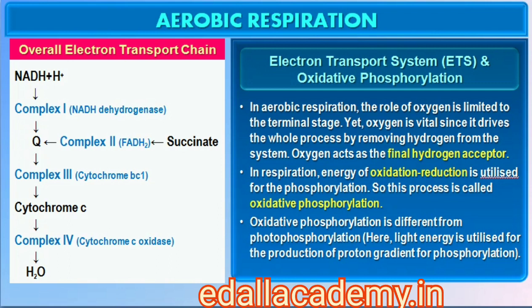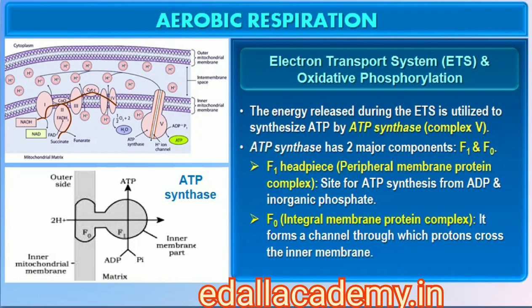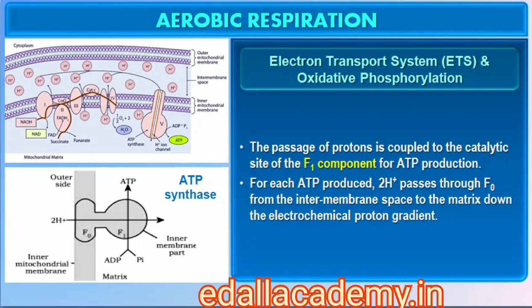Unlike photophosphorylation where light energy is utilized for the production of the proton gradient required for phosphorylation, in respiration it is the energy of oxidation-reduction utilized for the same process — hence the process is called oxidative phosphorylation. The energy released during the electron transport system is utilized in synthesizing ATP with the help of ATP synthase (complex V). This complex consists of two major components, F1 and F0. The F1 headpiece is a peripheral membrane protein complex containing the site for synthesis of ATP from ADP and inorganic phosphate. F0 is an integral membrane protein complex that forms the channel through which protons cross the inner membrane, and for each ATP produced, two H+ pass through F0 from the intermembrane space to the matrix down the electrochemical proton gradient.